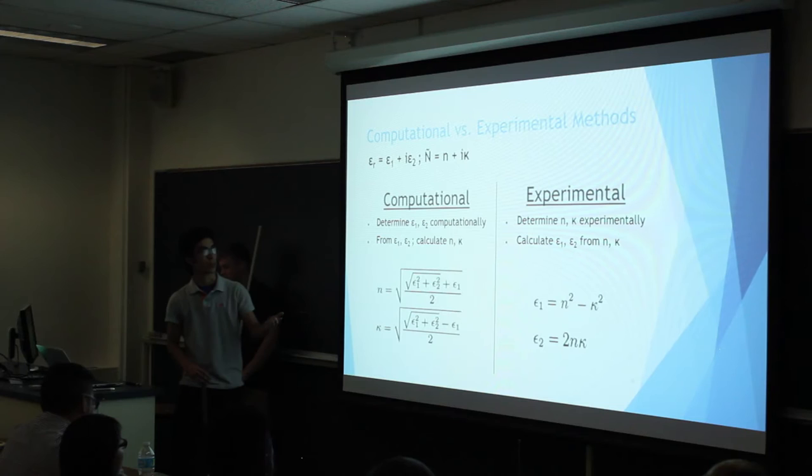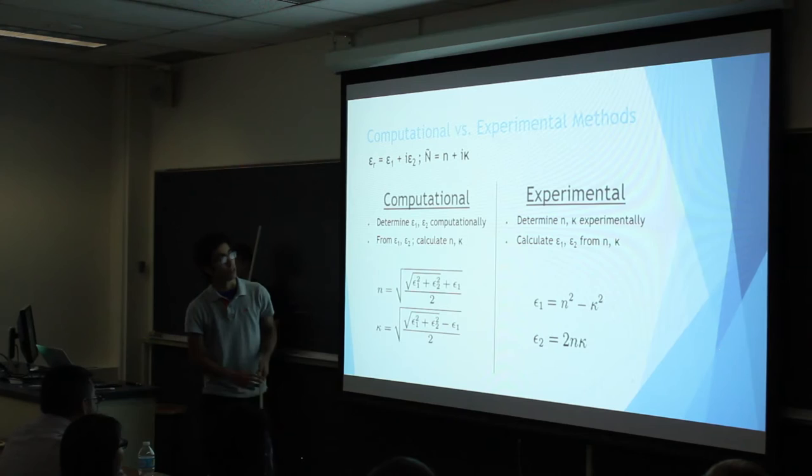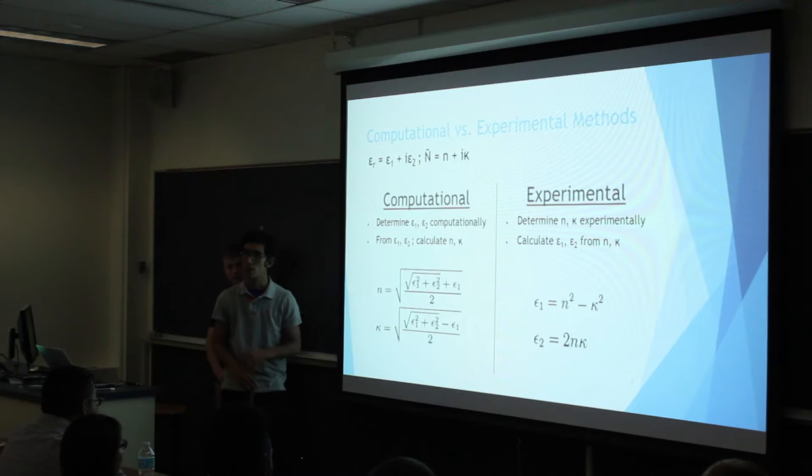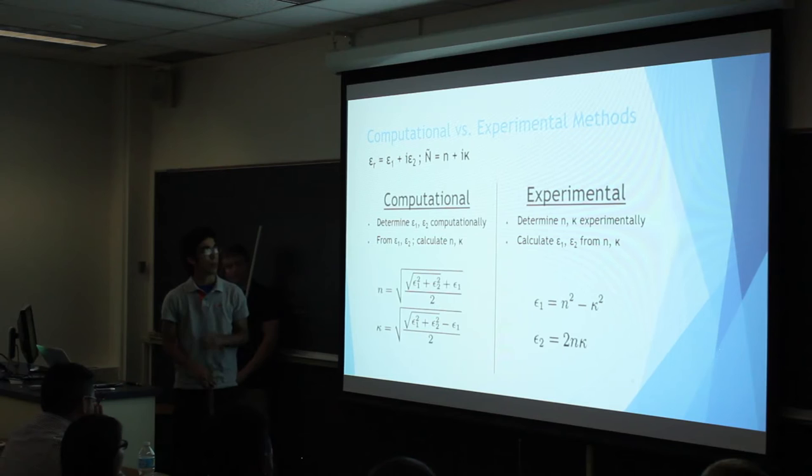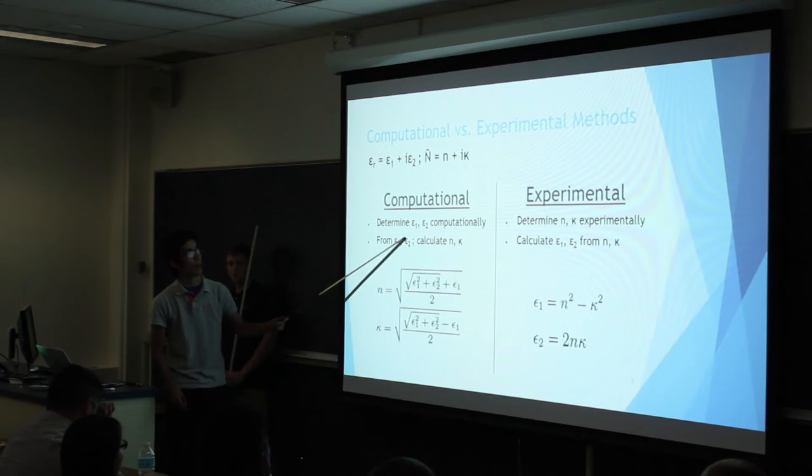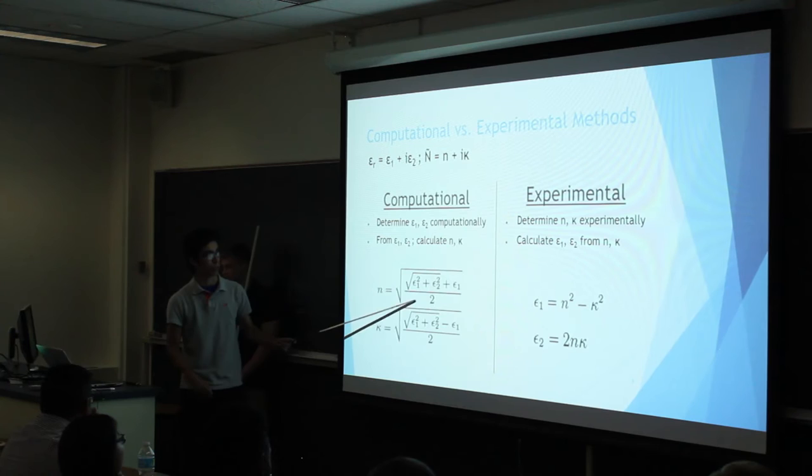So there are a few ways that we can do optics. There are experimental methods which use methods such as ellipsometry, where they calculate n and kappa experimentally, and from this they're able to calculate epsilon 1 and epsilon 2 using the relationship described in the last slide. But what we're going to be doing is, from a purely computational standpoint, our program is going to allow us to calculate epsilon 1 and epsilon 2, and from this we can derive n and kappa using these relationships.